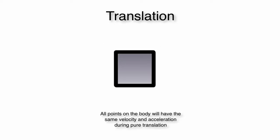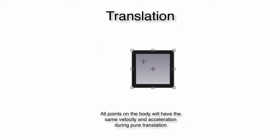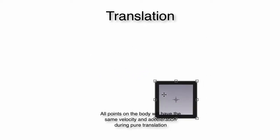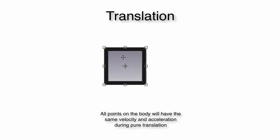If we have this box here, we can demonstrate each type of motion. Translation is simply moving it around. If it moves without rotating, it can move in a straight line, in a circle, or in a curved path. As long as all points remain parallel to their original orientation, we consider this translation.